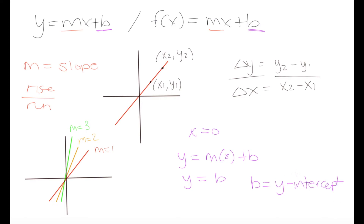It makes sense that b is our y-intercept because the y-intercept is where the graph crosses the y-axis, which occurs when x equals zero. So our y-coordinate when x is zero is the point at which our graph crosses the y-axis — and that is our b term, the y-intercept.